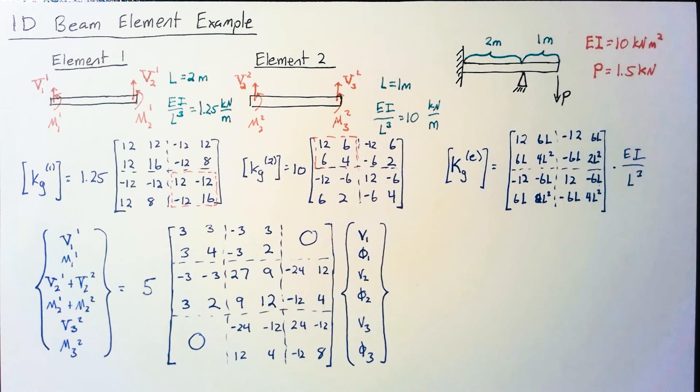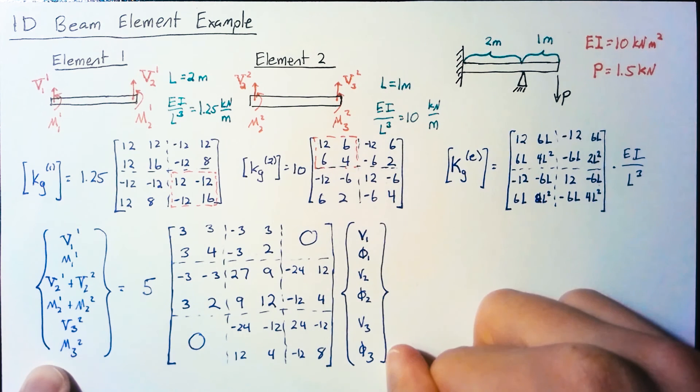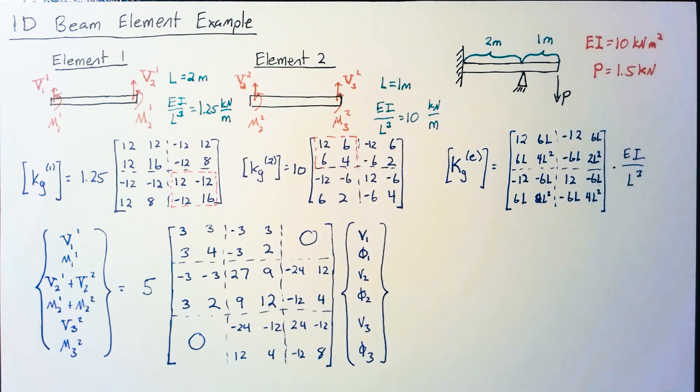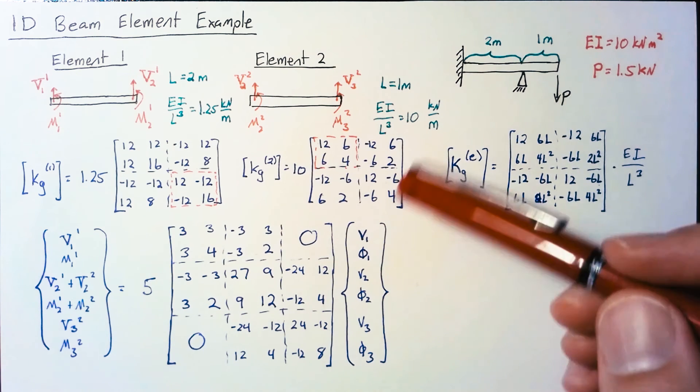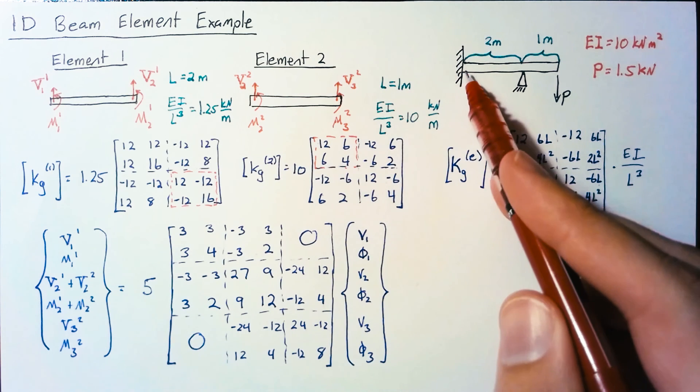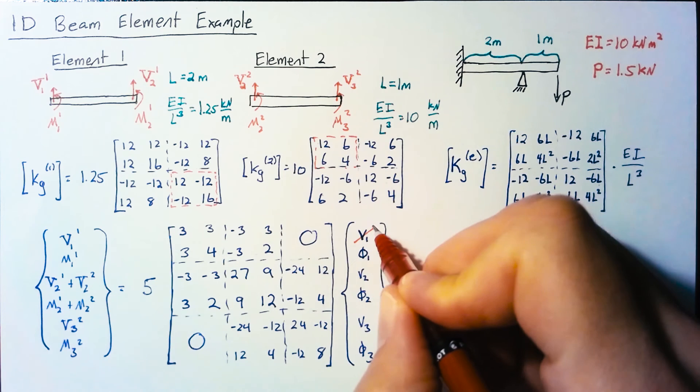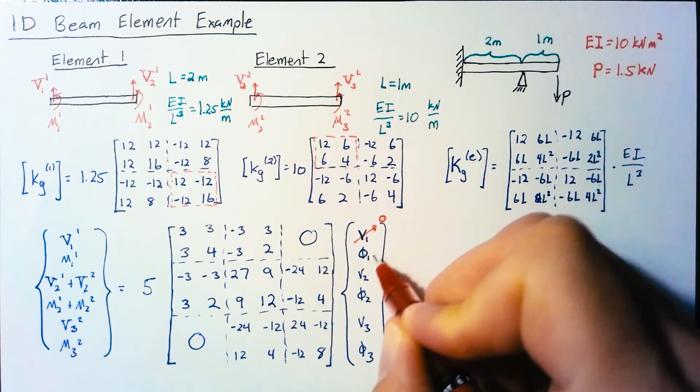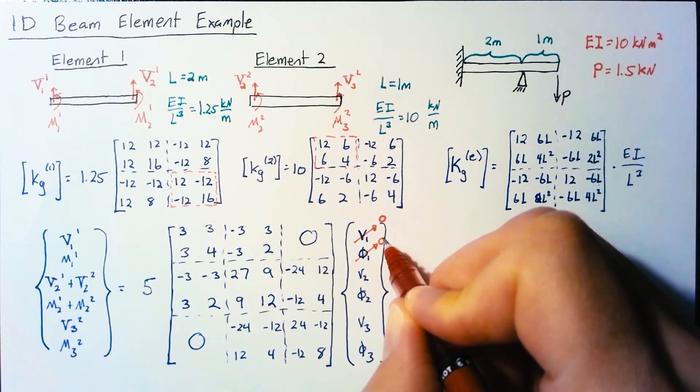Our next step is to look at our forces and see which we can identify, and our displacements to see what boundary conditions apply. At node 1, which is on the wall, both position and rotation displacement must be zero since we're not allowing movement or rotation.